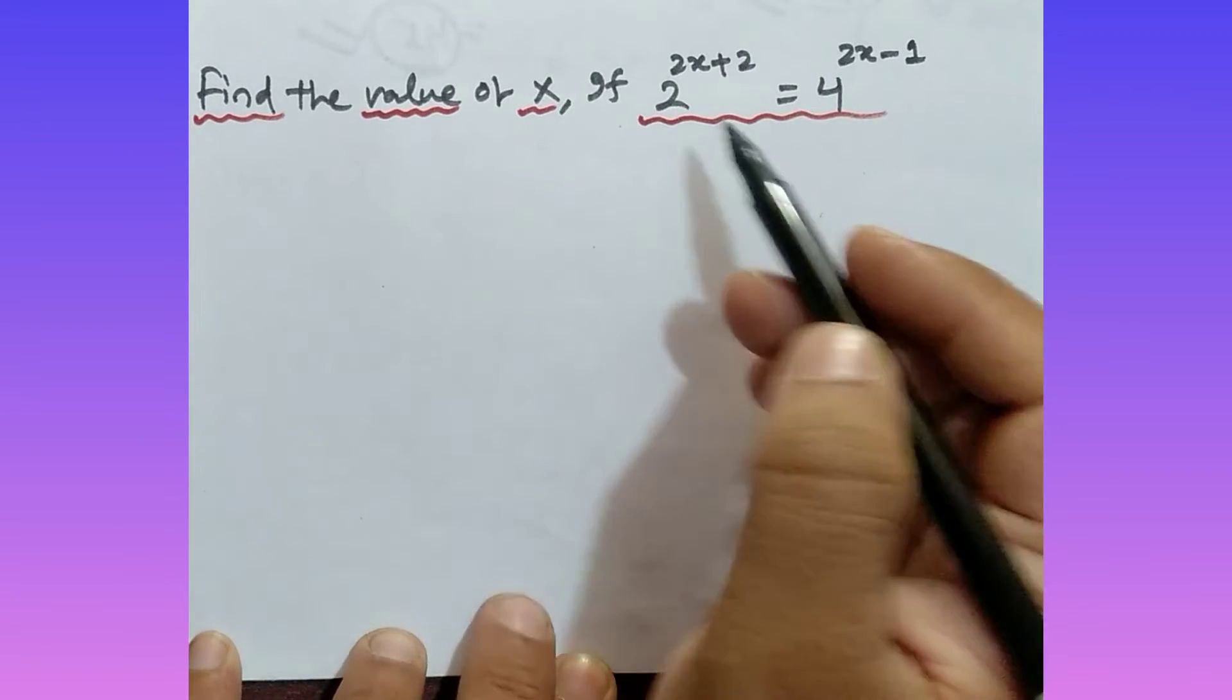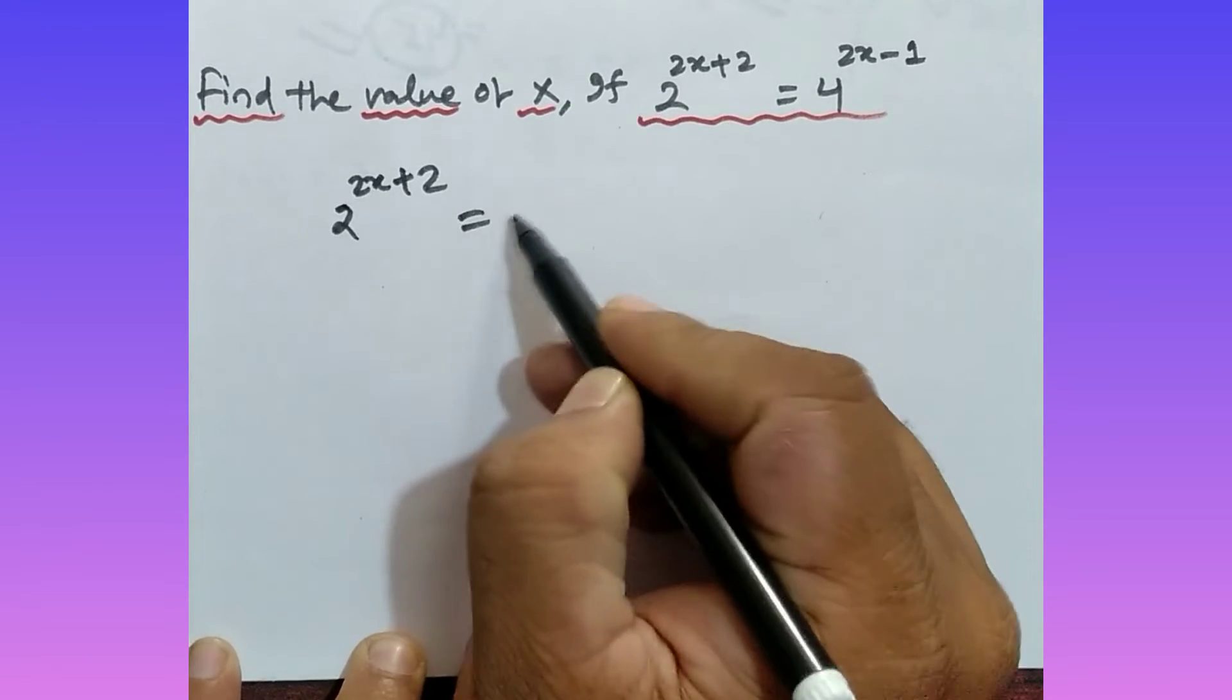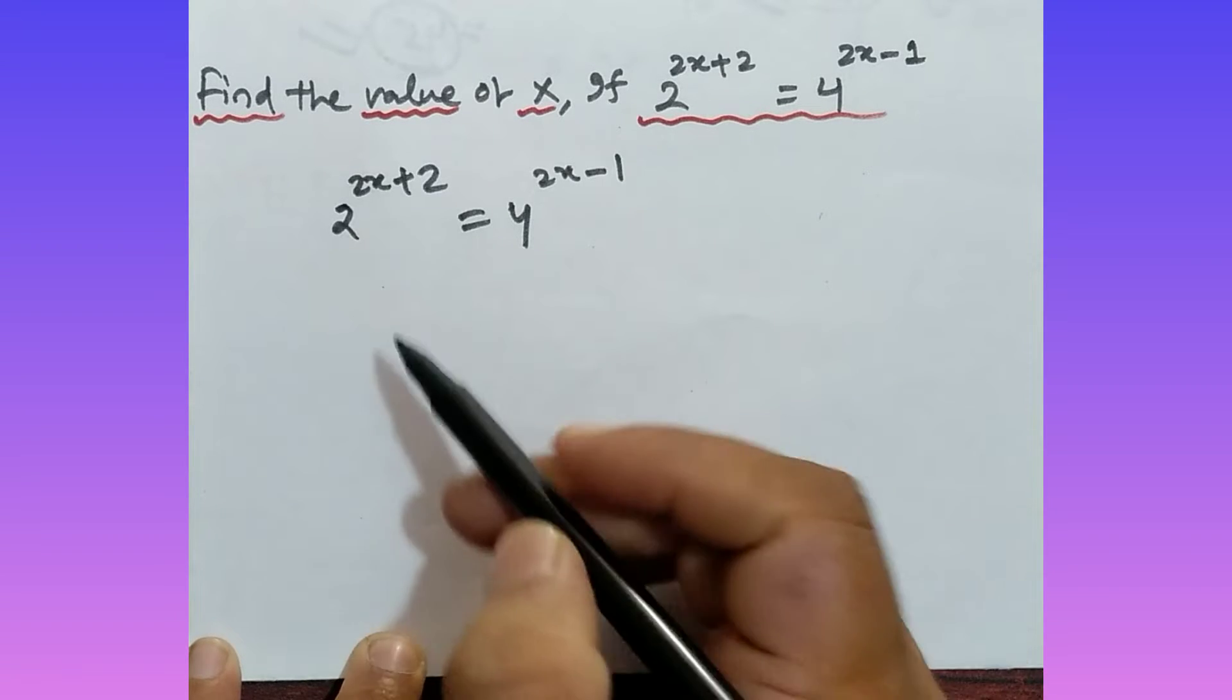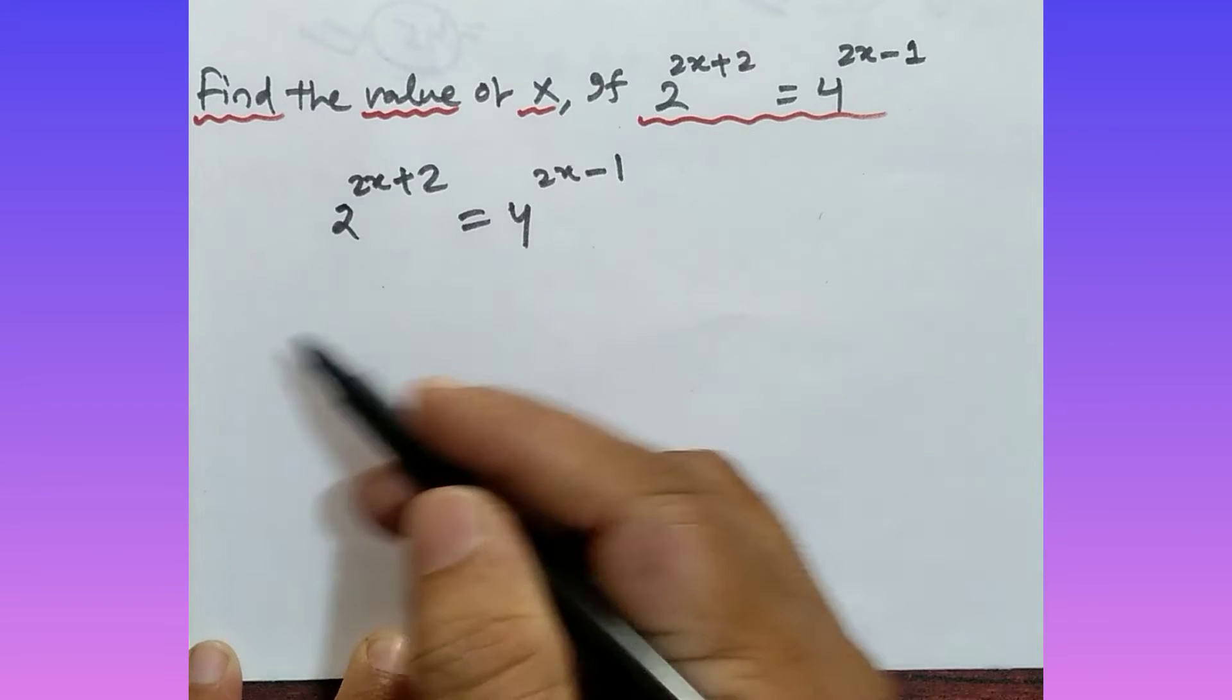Okay, how can I find the value of x? Look over here, that is 2 to the power 2x plus 2 is equal to 4 to the power 2x minus 1. Right, according to the question, find the value of x. How can I do this? Look at LHS side and RHS side, you have to make the base part equal. How to make the base part equal?